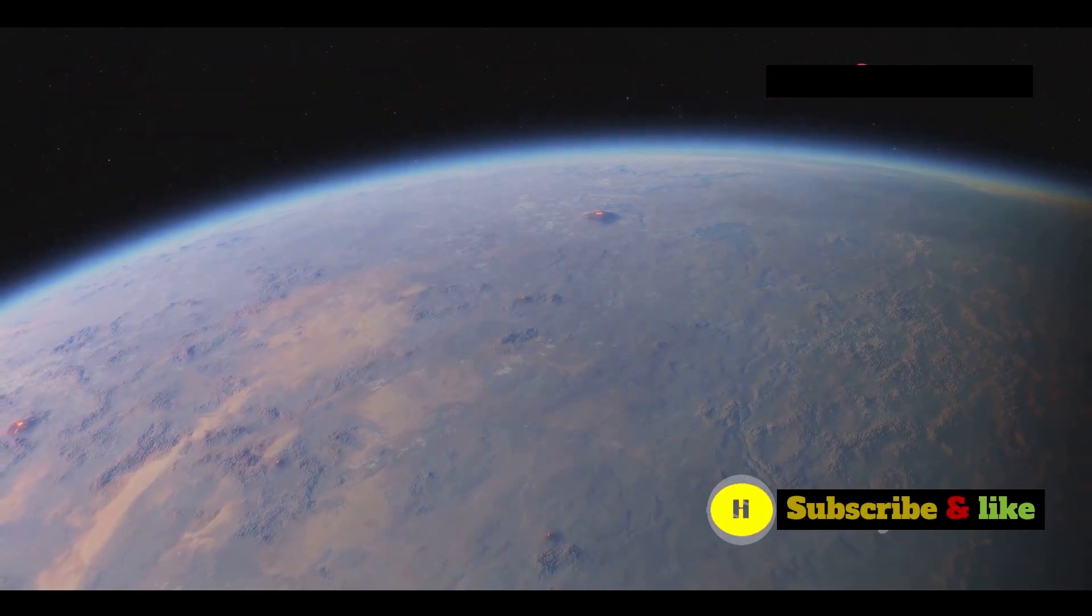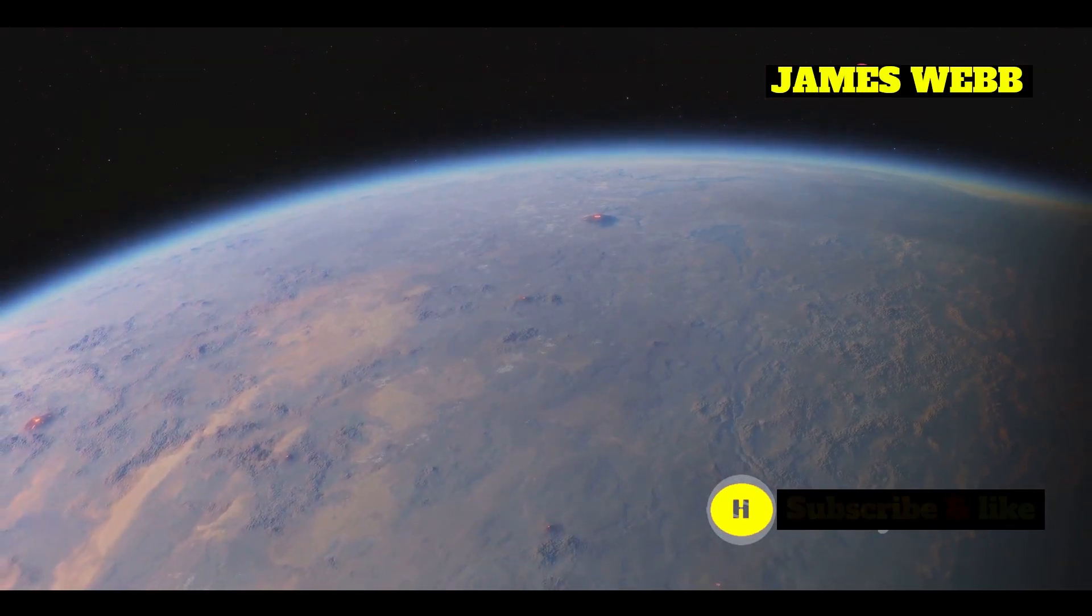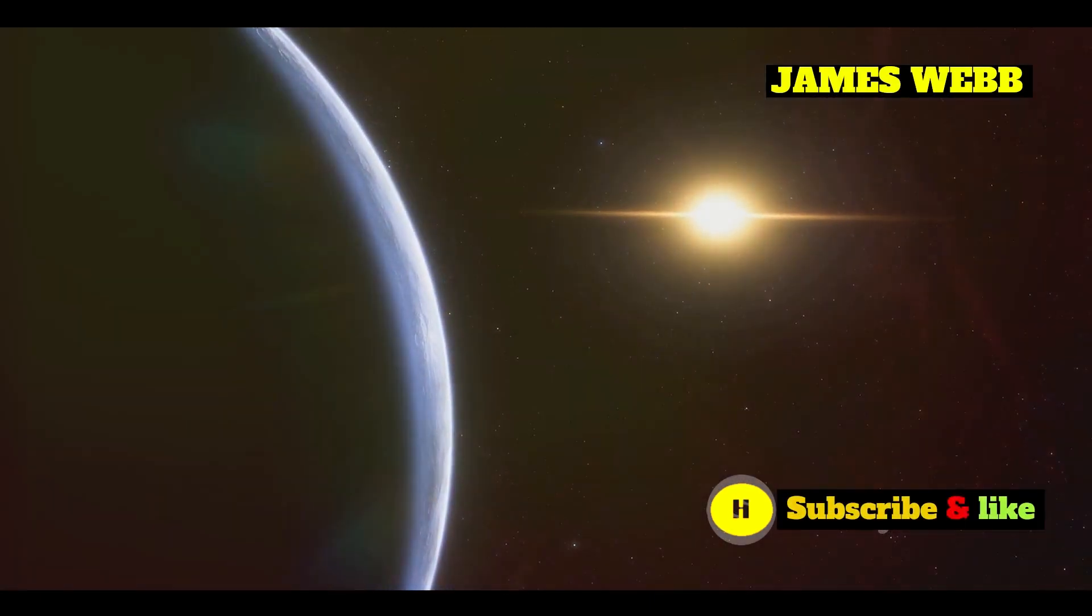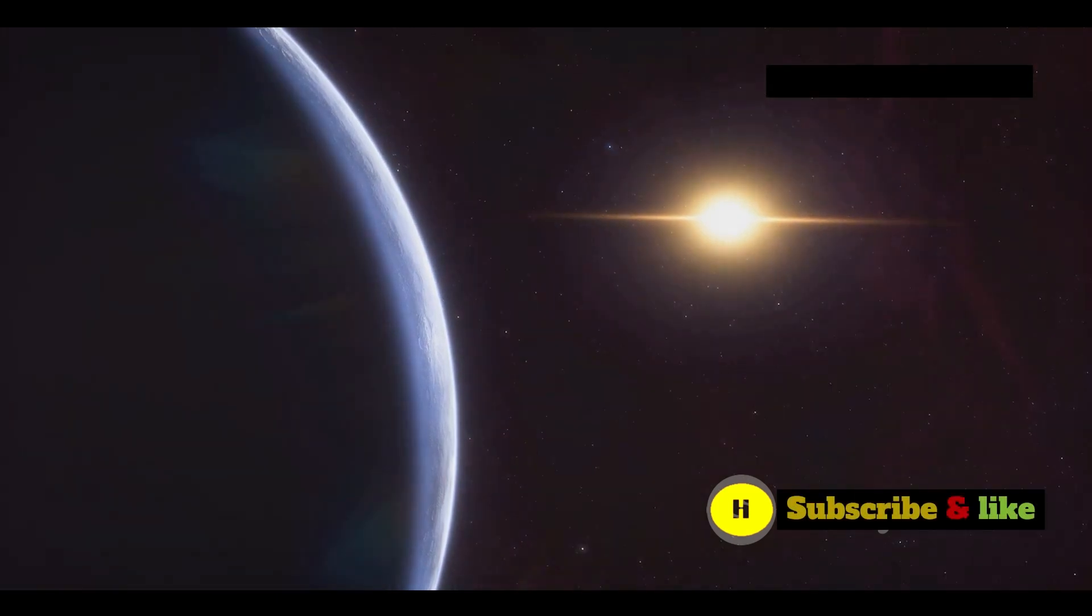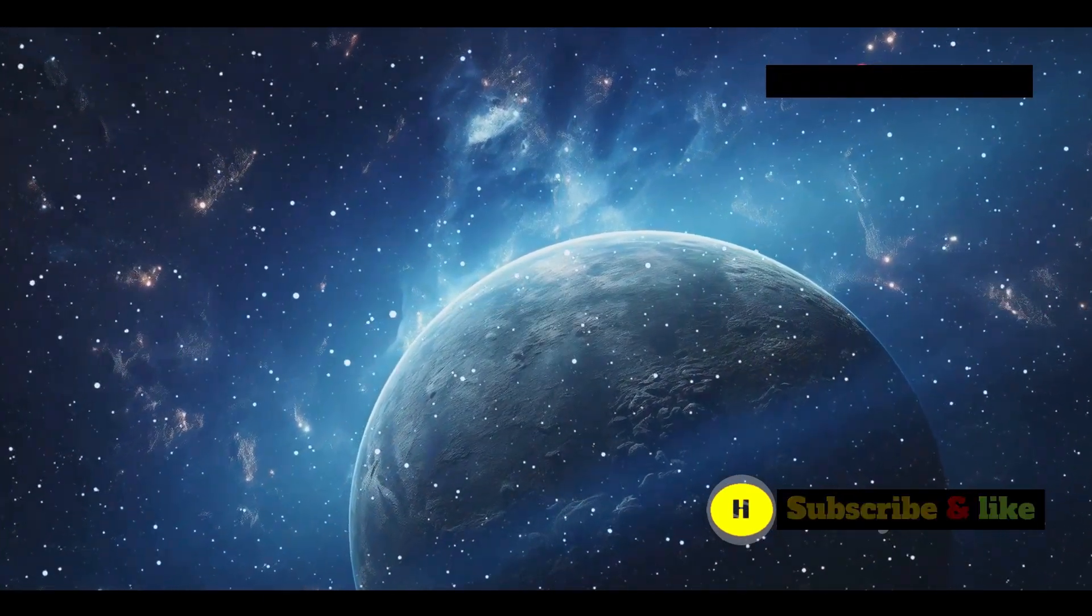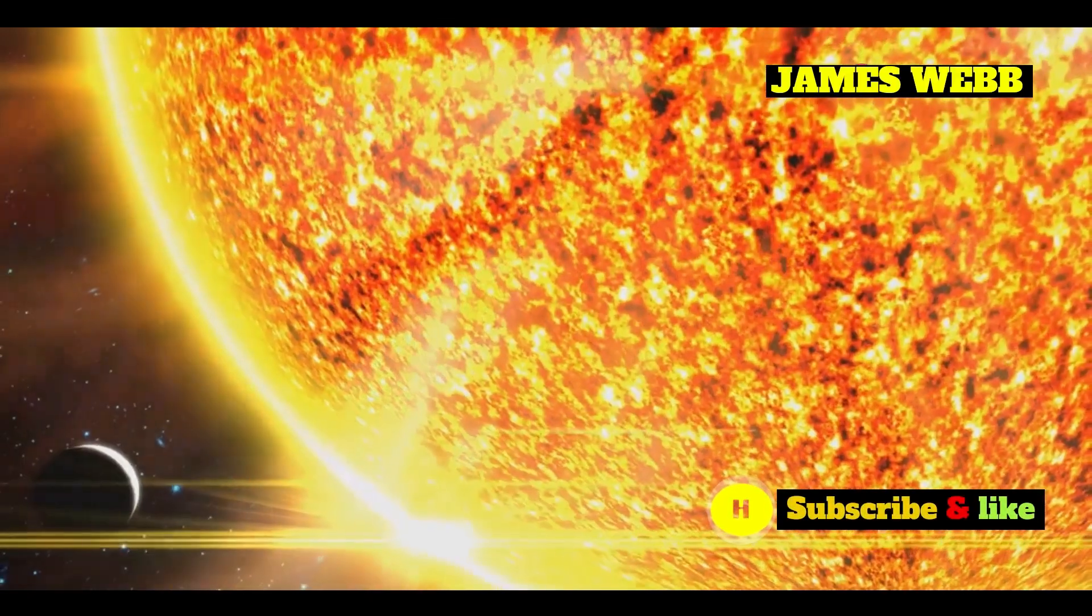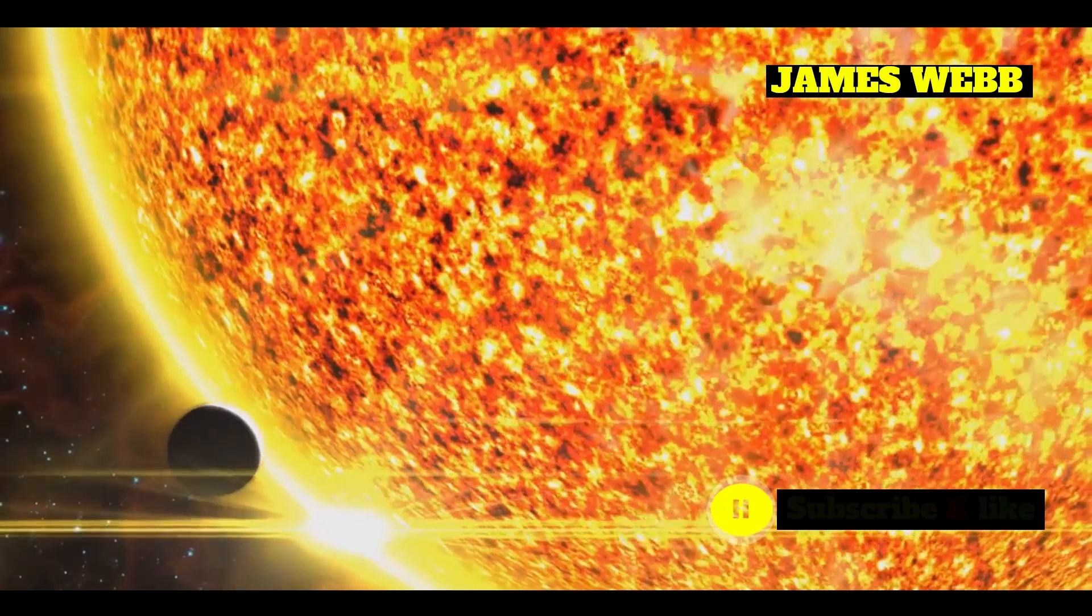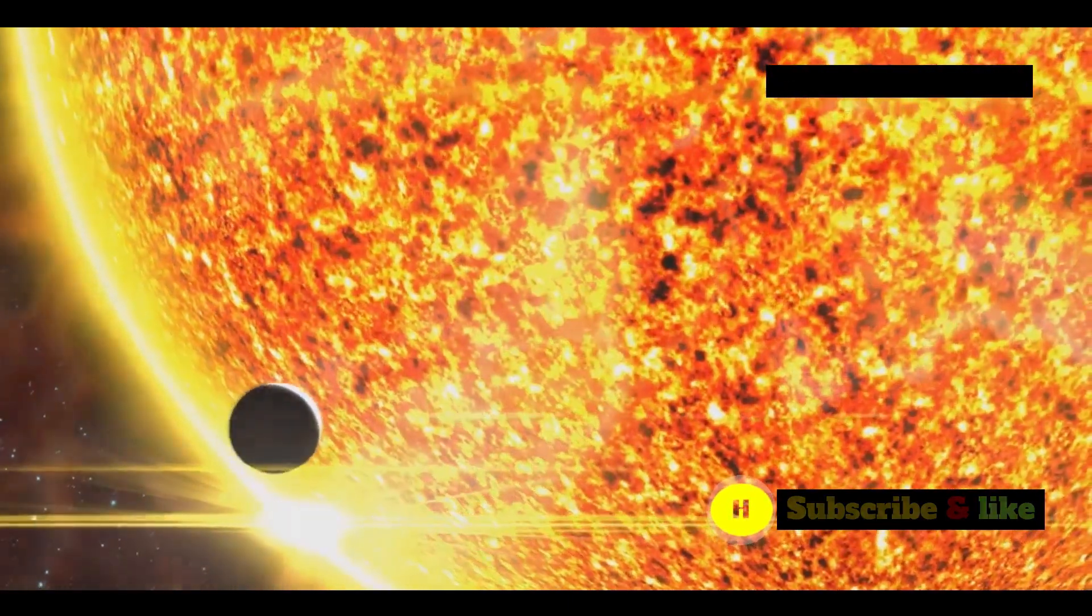What makes 55 Cancri E really fascinating is its extreme conditions. This super-Earth zips around its star incredibly fast, completing an orbit in just 18 hours. A year on 55 Cancri E is shorter than a day on Earth. Being this close to its star significantly affects the planet's environment, blasting it with intense heat and making it a world of extremes.